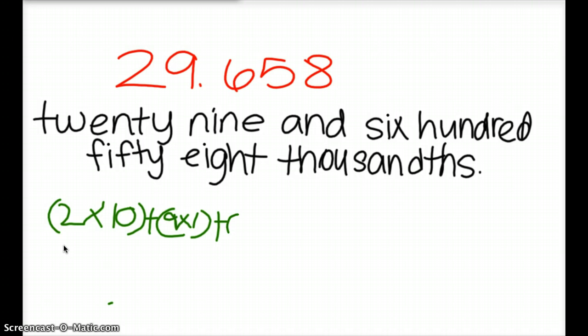Awesome. So you have two times ten, because the two is in the tens place, plus nine times one, because the nine is in the ones place. Six times one-tenth, because it's in the tenths position, plus five times one-hundredth, because the five is in the hundredths position. Leave the chair alone. And then lastly, eight times one-one-thousandth, because it's in the thousandths position. Does anybody have any questions on this one? No.